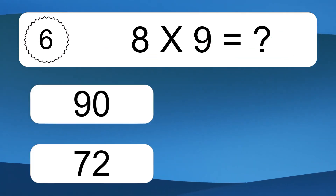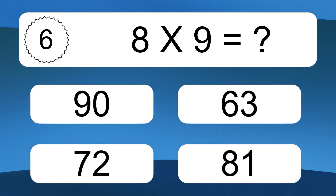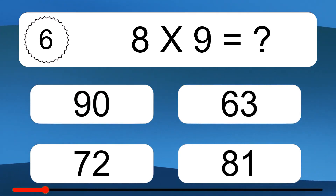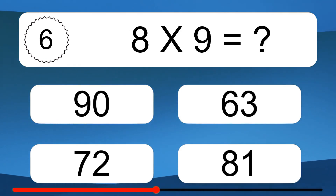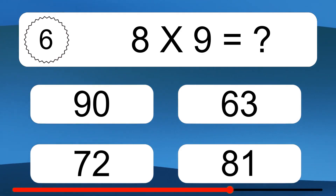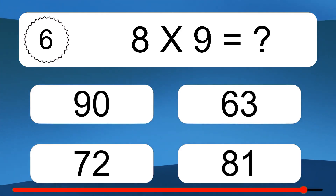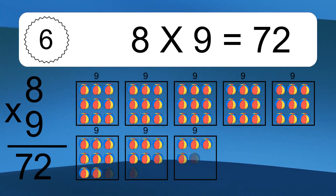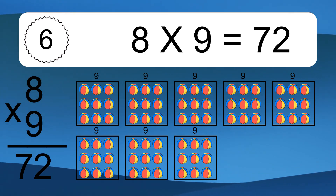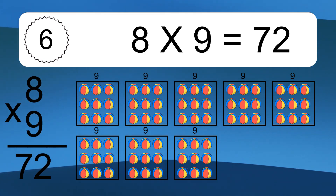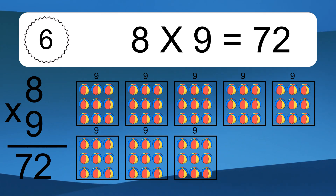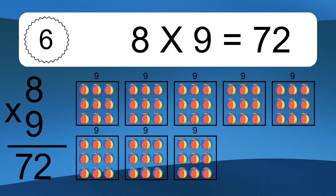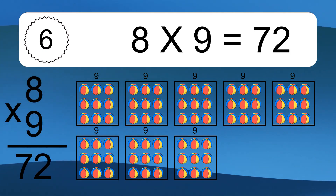8 times 9 equals what? 8 times 9 equals 72. We have 8 boxes, and each box has 9 colorful balls inside. If you count all the balls in all the boxes together, you will have 8 times 9 balls. This equals 72 balls.